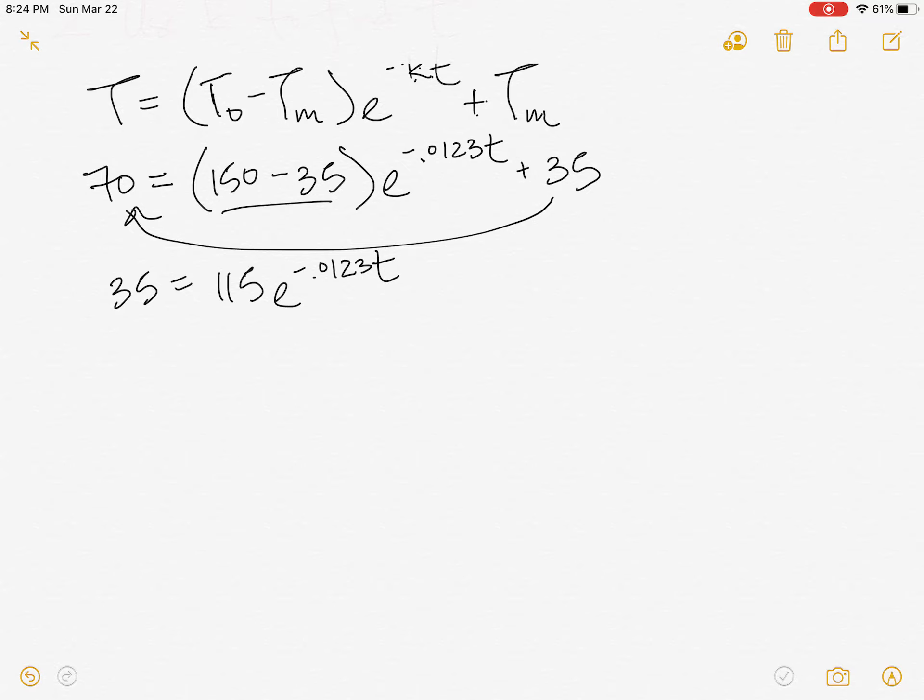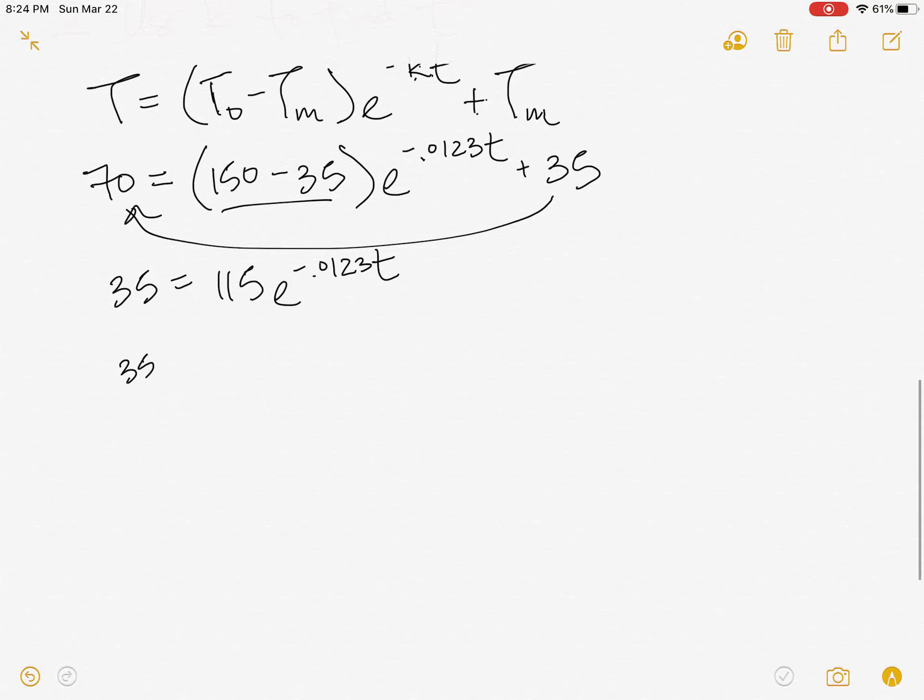I'm going to divide both sides by the 115, so 35 over 115 equals e to the negative 0.0123t.